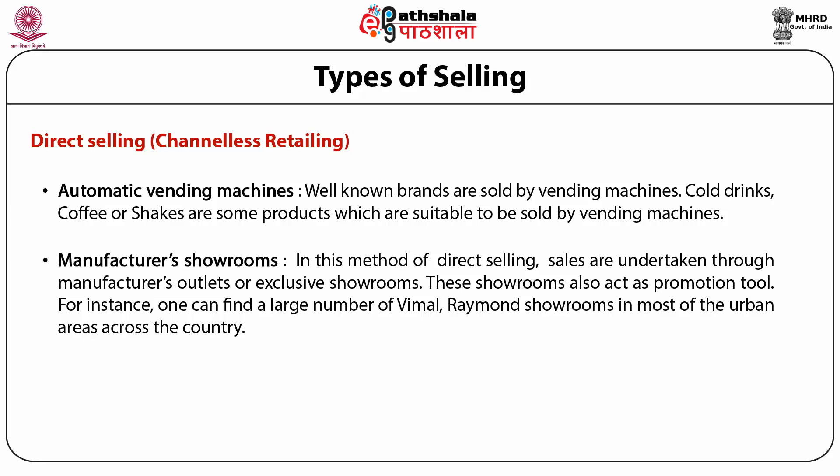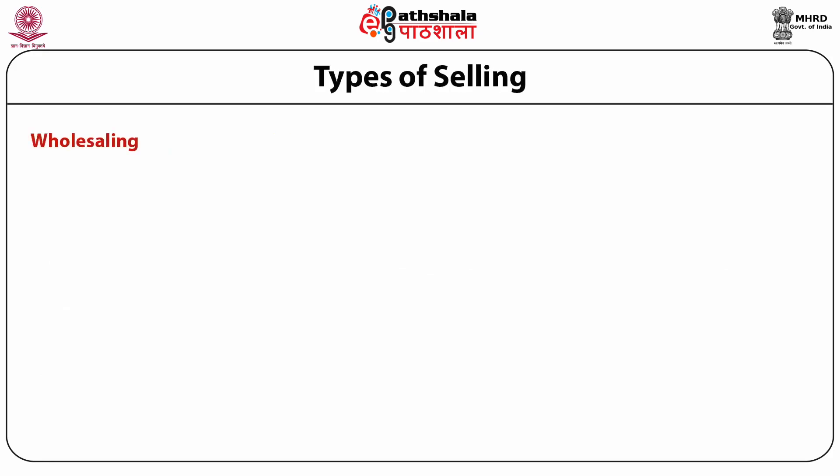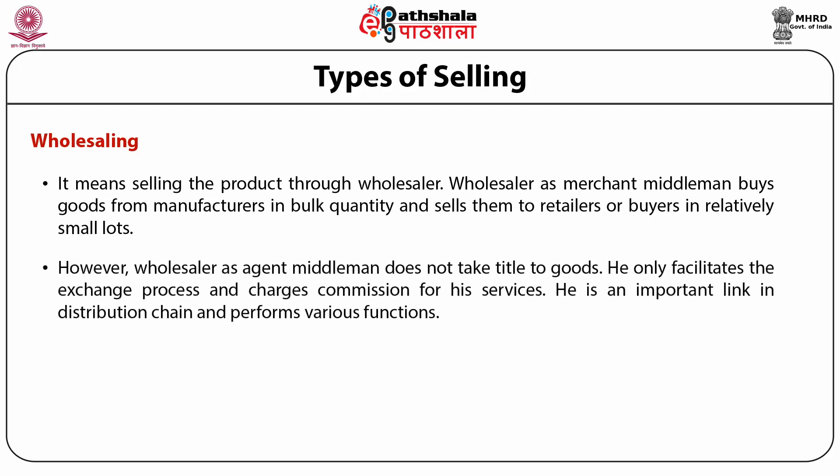Factory outlets are owned and used by manufacturers to sell surplus goods. Goods are generally sold at less price — as much as 50% below the retail price. Wholesaling means selling the product through a wholesaler. A wholesaler as merchant middleman buys goods from manufacturers in bulk quantity and sells them to retailers or buyers in relatively small lots. However, a wholesaler as agent middleman does not take title to goods — he only facilitates the exchange process and charges commission for his services. He is an important link in the distribution chain.